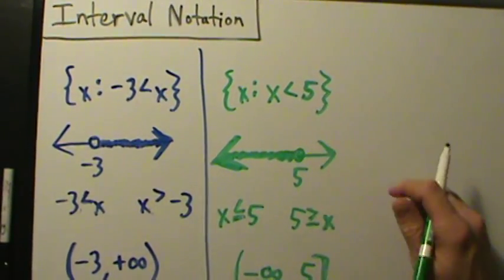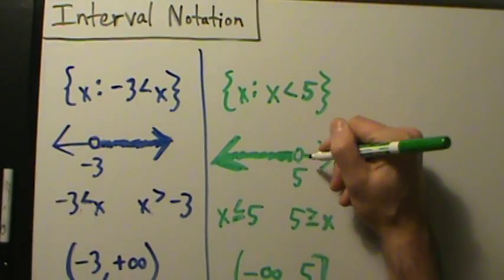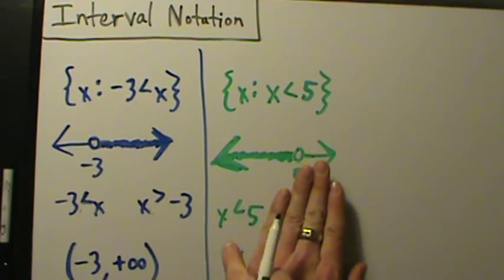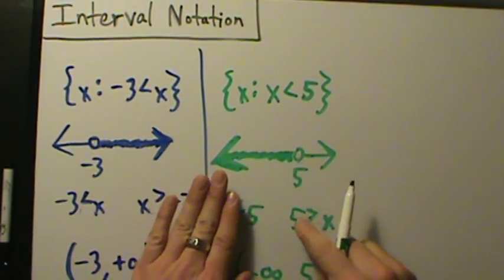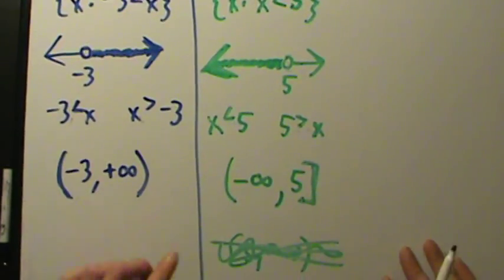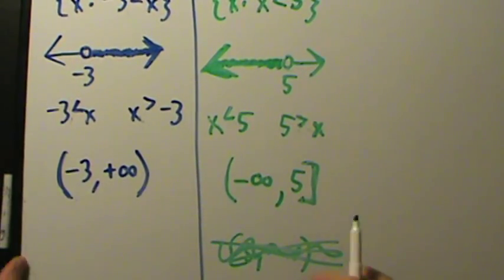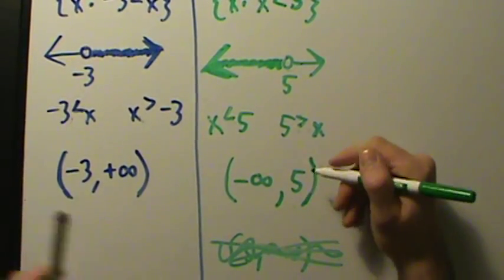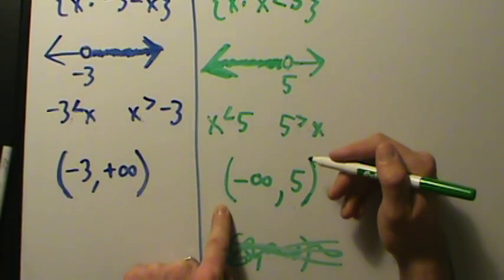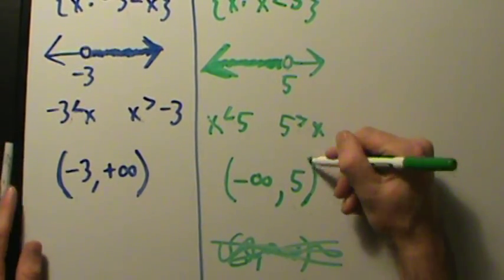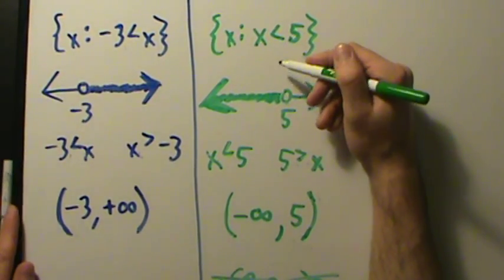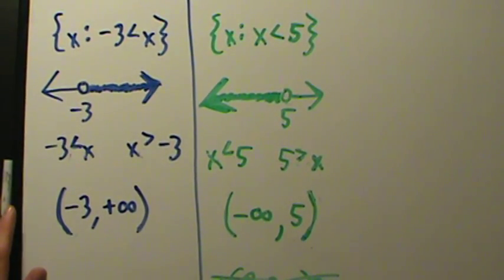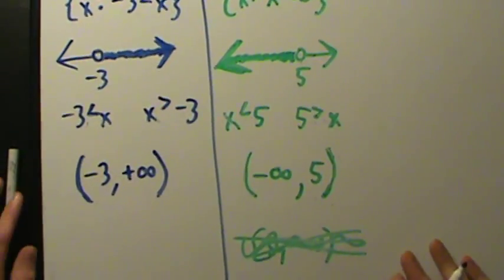Just like before, what if we use a strict inequality? Then the circle becomes open, the inequalities become strict — 'x is strictly less than 5' or '5 is strictly greater than x' — and in interval notation this becomes negative infinity comma 5 with a rounded parenthesis on 5. The negative infinity still always gets a rounded parenthesis, unchanged.